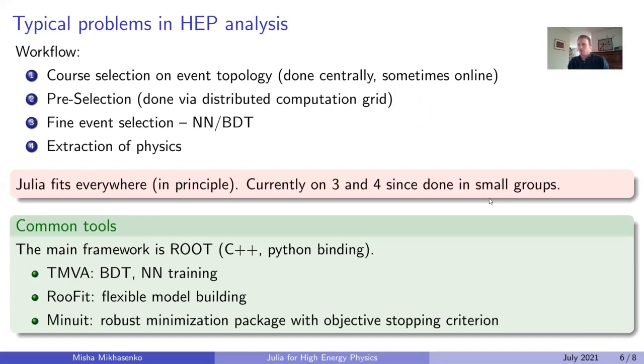The fine selections from the third step involves usually multivariate analysis and neural networks. And the last step is really modeling when you come up with a model and adjust the parameters of the model to fit the data, and in that way extract the physics information.